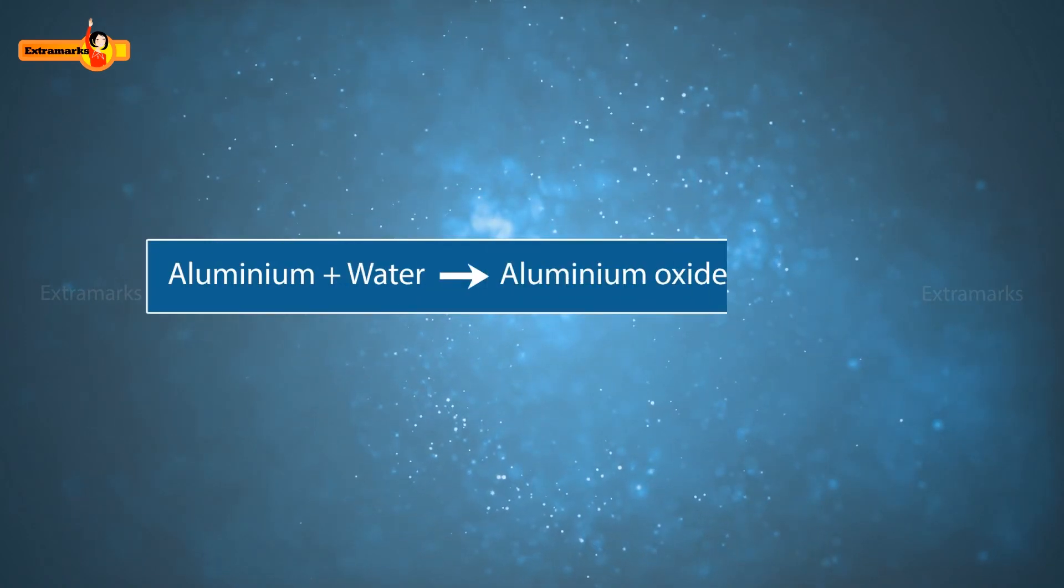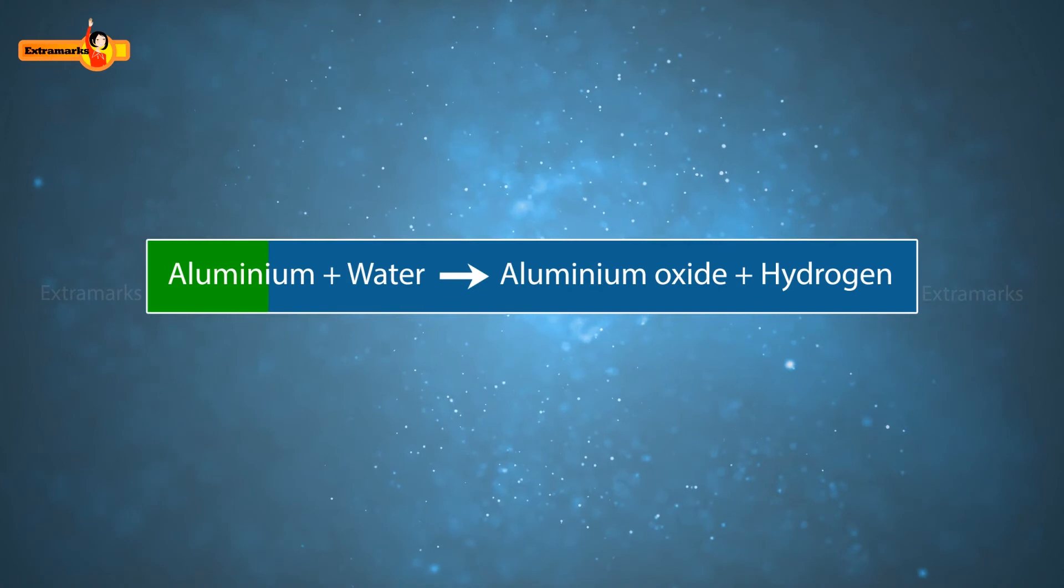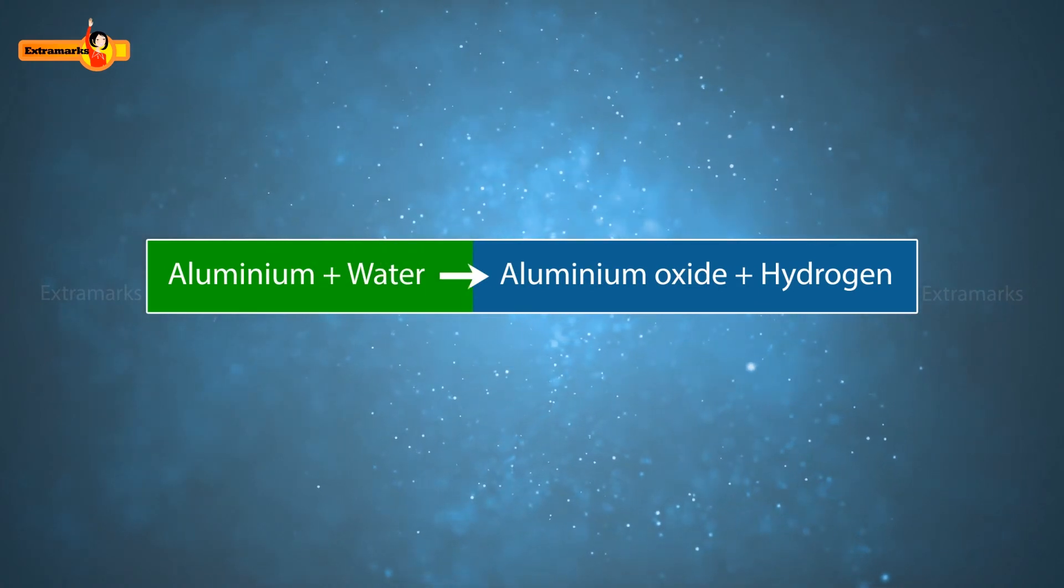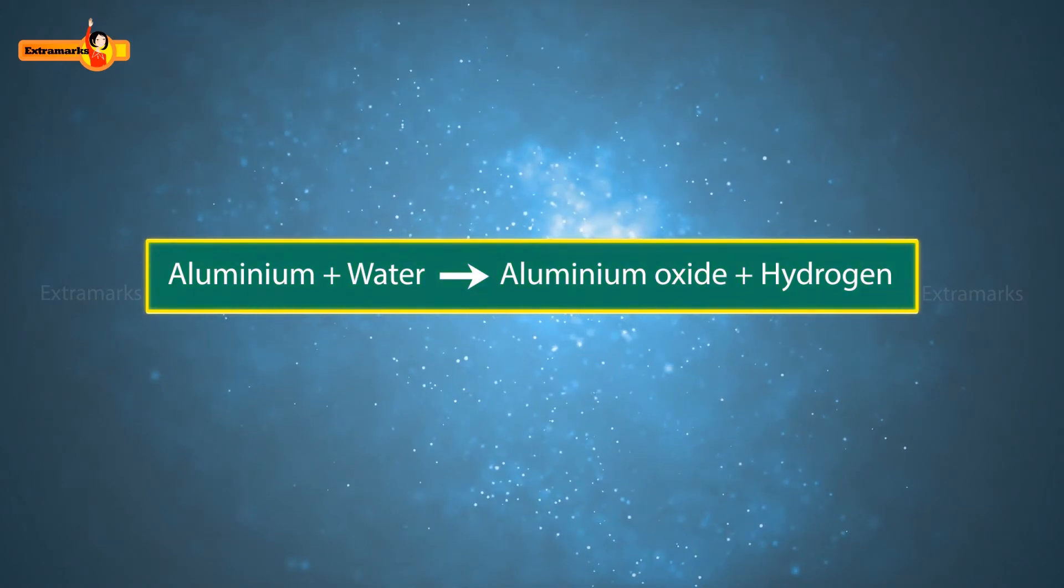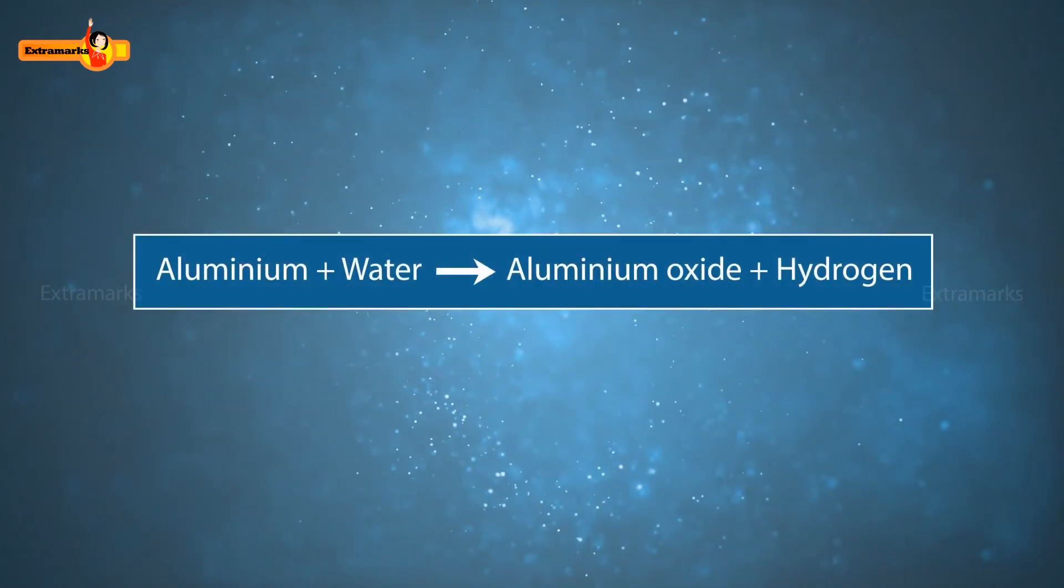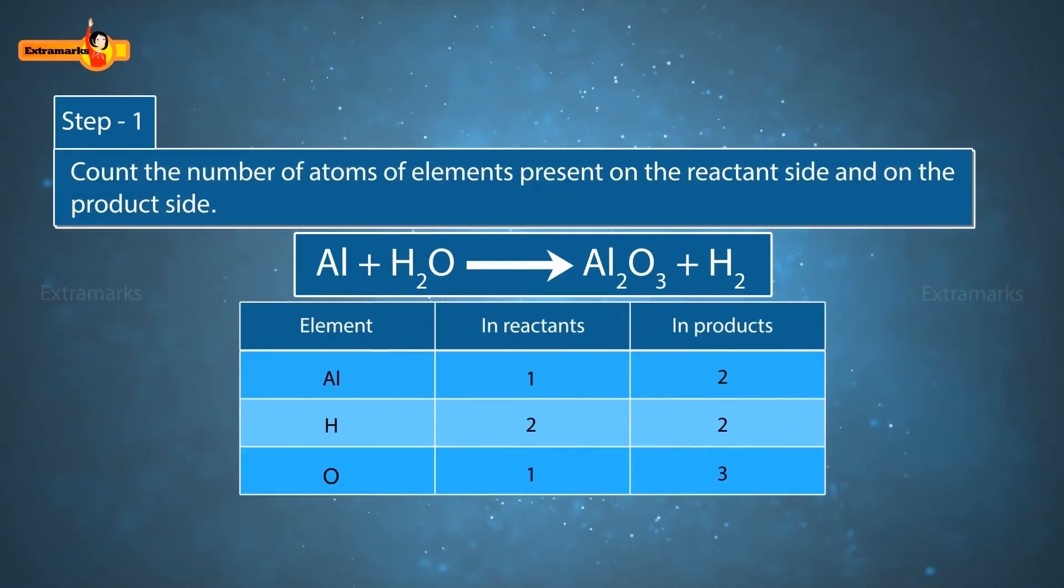Let us balance another chemical reaction to check our clarity on the topic. Aluminium and water react to form aluminium oxide and hydrogen gas. The symbol equation can be written as: Recall that first we need to count the number of elements present on the reactant side and on the product side.